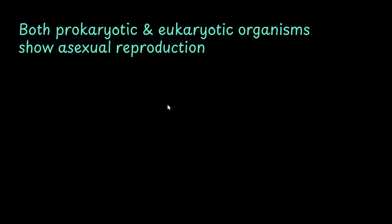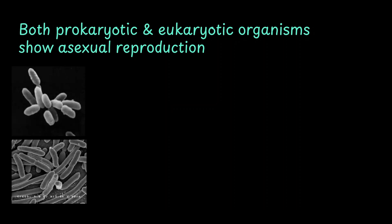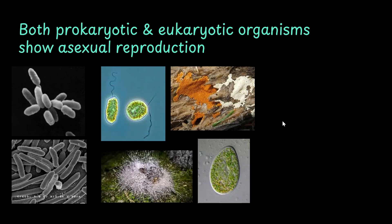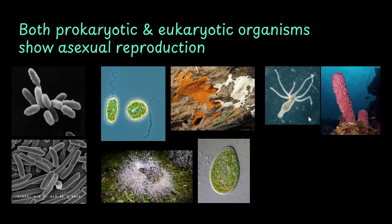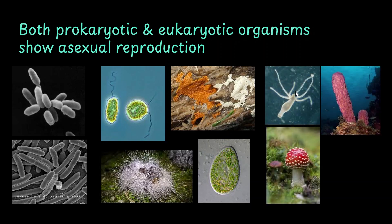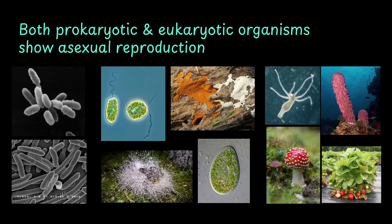Asexual reproduction is not only seen in prokaryotes like archaea and bacteria, but also in eukaryotic single-celled organisms — protozoa, algae, slime mold, and water mold — and in multicellular organisms with very basic organization, such as hydra, sponges, some fungi, and even some plants like the strawberry. In plants, asexual reproduction is also called vegetative propagation.